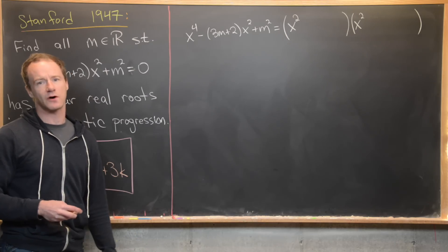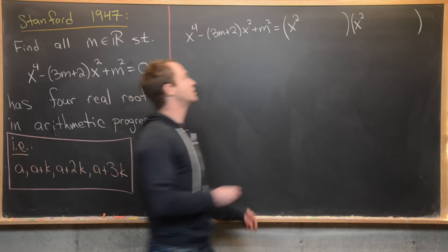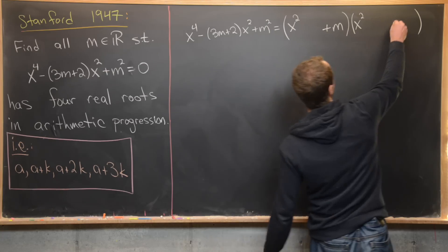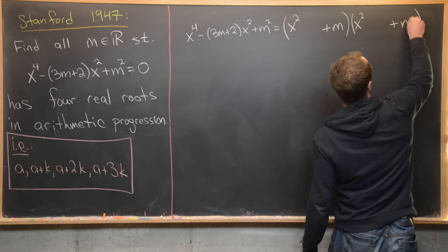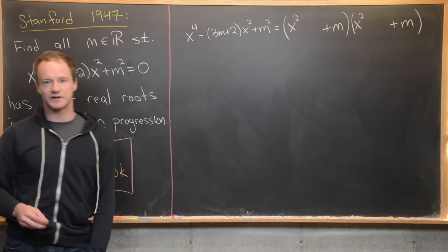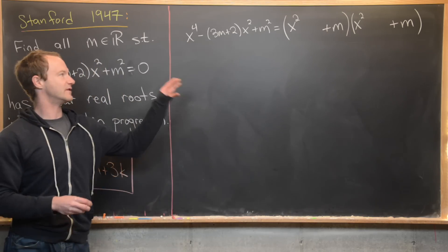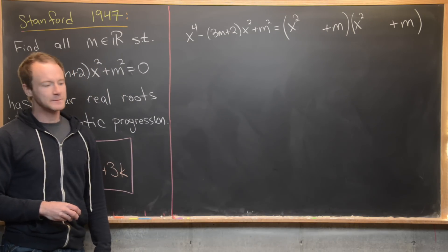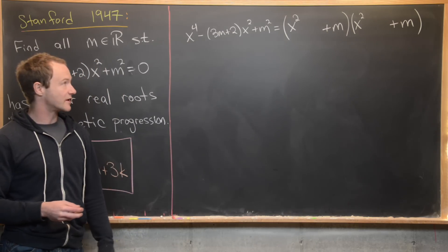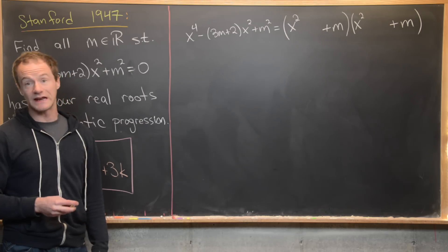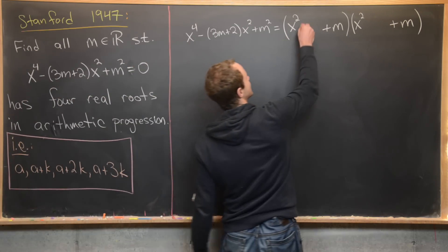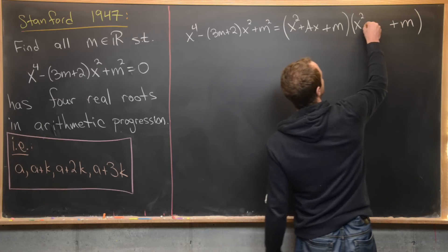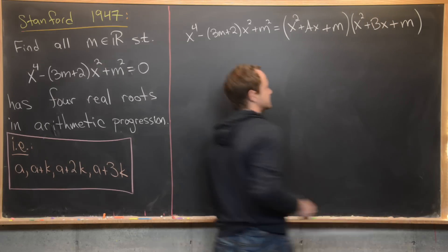Since this is a math contest problem it likely works out nicely, so we can take the constant term for each quadratic factor to be m — giving m × m = m². We then write the linear terms as ax and bx respectively.